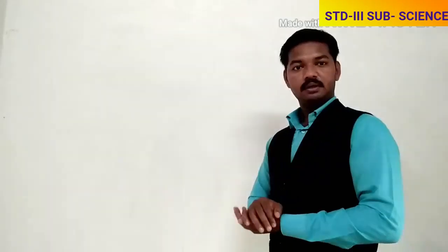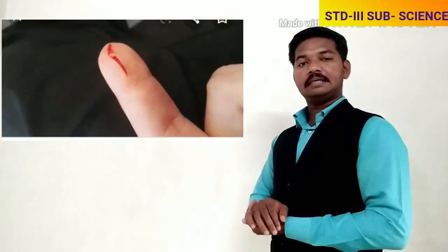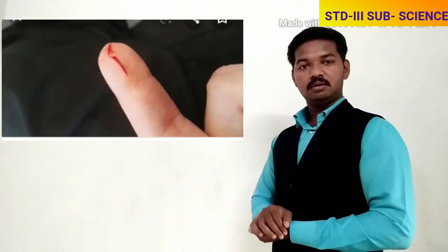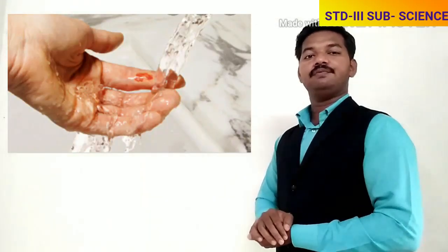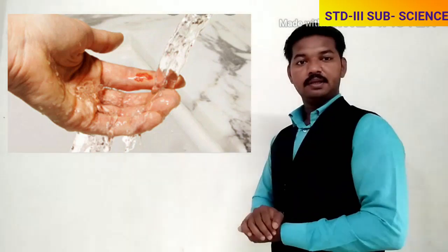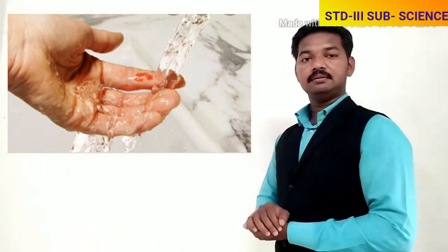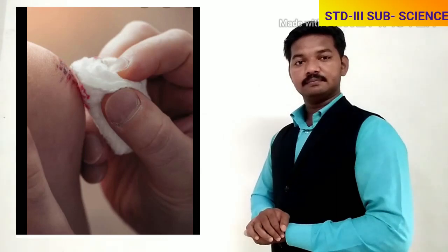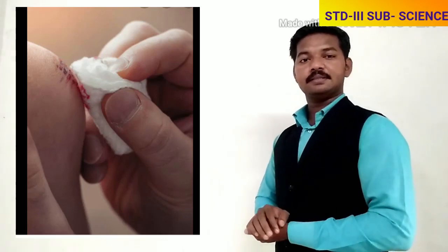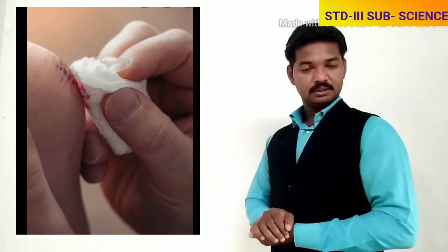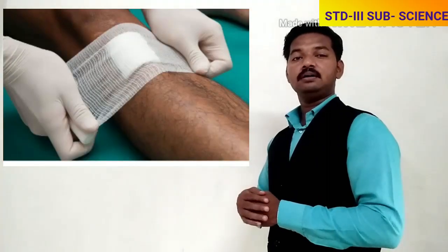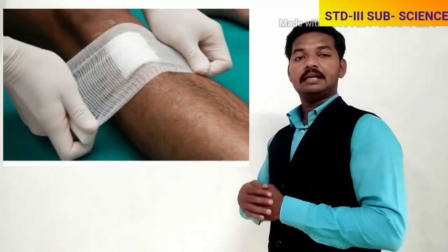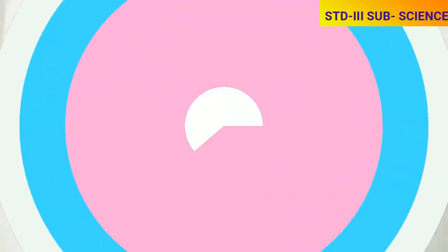Now we will see which first aid we have to give for a small cut. If the wound or cut is small, we first have to wash it with water, then clean the area with cotton having antiseptic lotion, then tie a bandage or a clean cloth over it.